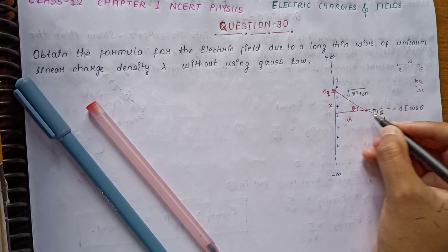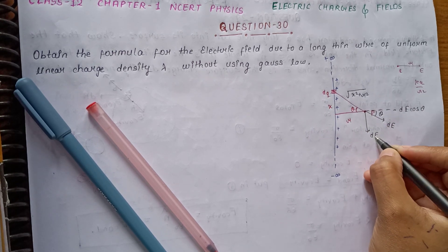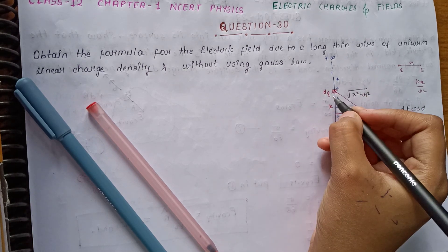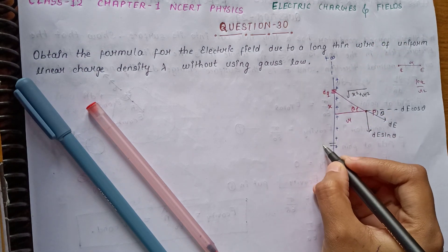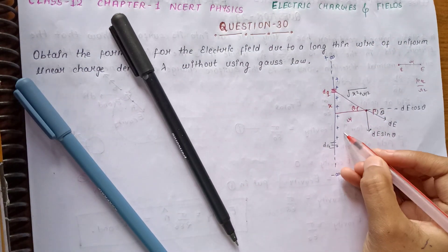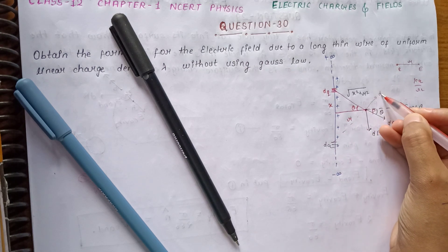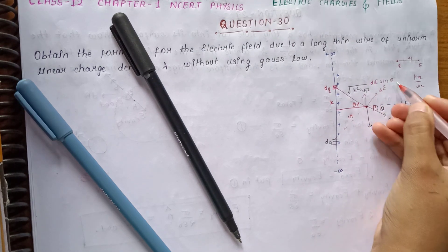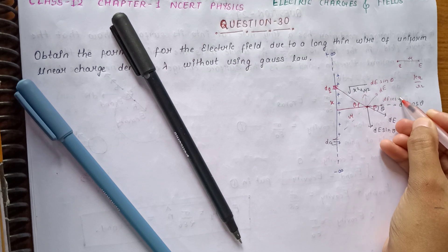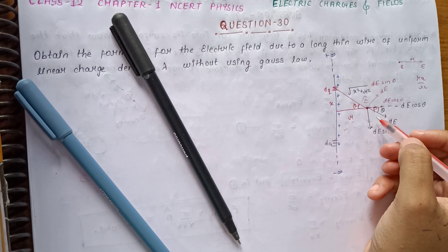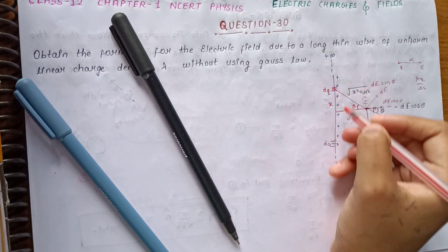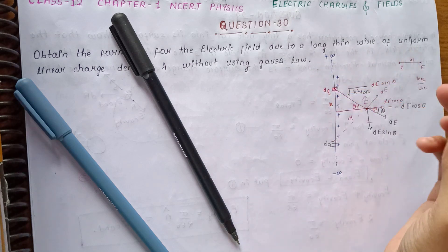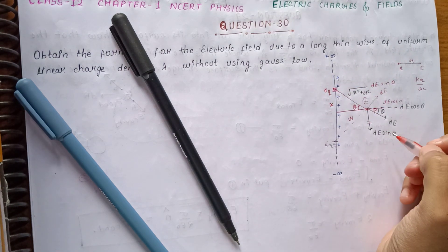Now the electric field dE has two components. We extend it and look at the vertical and horizontal components. The dE sinθ components cancel out due to symmetry — for an opposite charge element on the other side, the sinθ component cancels. We are left with only the dE cosθ component.